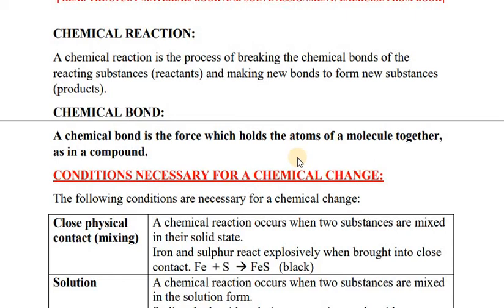A chemical bond is the force of attraction which binds two atoms, a molecule, or a compound. For example, hydrogen H₂ is a molecule with covalent bonds. Water (H₂O) is a compound where hydrogen-oxygen bonds are present. Similarly, carbon dioxide is also a compound. We should be clear about molecules, homoatomic and heteroatomic molecules, and compounds — all these fundamental concepts should be very clear.